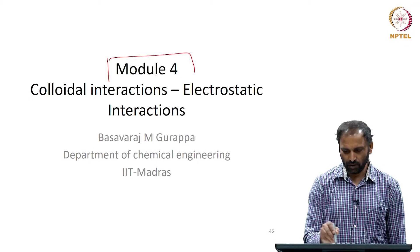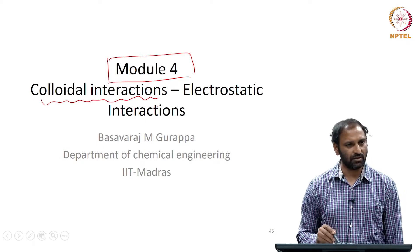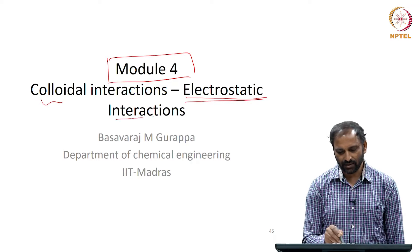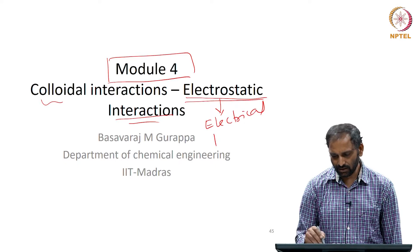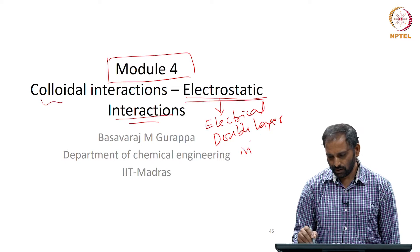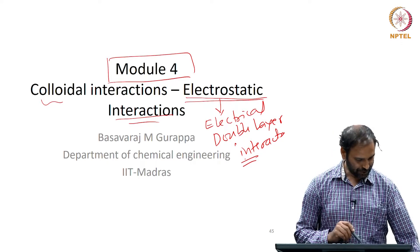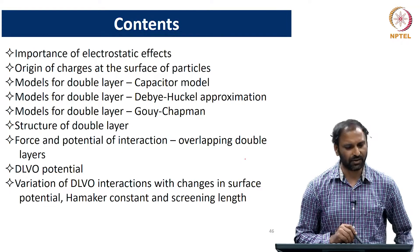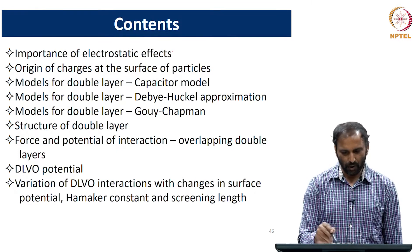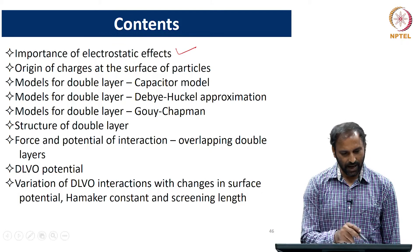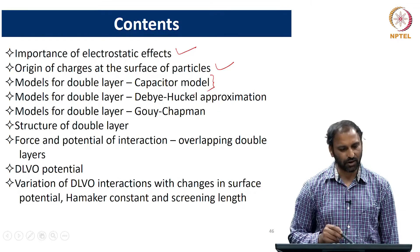The next module is Module 4, in which we are going to look at colloidal interactions again, but looking at what is called electrostatic interactions — they are also called as electrical double layer interactions. That is what we are going to do for the next few lectures. Today we will most likely look at the importance of electrostatic effects and origin of charges at the surface of particles, and if we have time, we will also look at models for the electrical double layer.